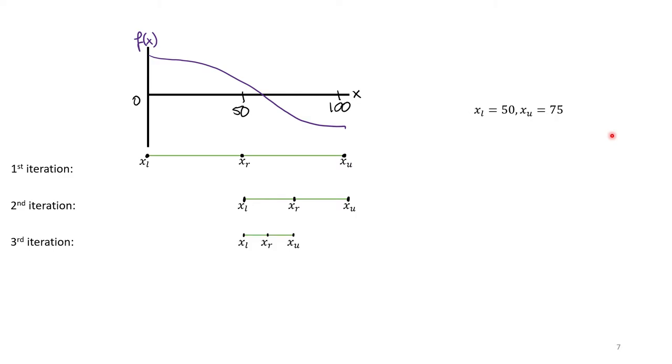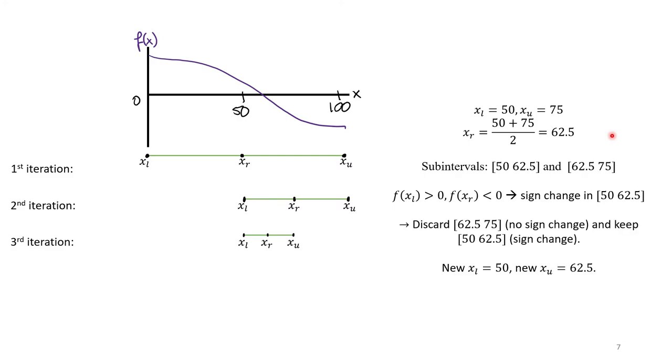Once again, we bisect the interval, evaluate the signs, and select a new subinterval for the fourth iteration. This process is repeated until we hone in on the root. Every iteration, we split the last interval in half and proceed with the interval which contains a sign change.